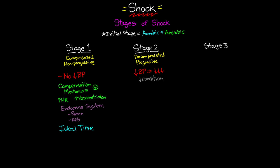In this second stage you're going to see hypoxic injury as a direct result of the decreased perfusion and decreased oxygen supply. As shock continues, more and more damage is done to cells and organs as a result of that persistent hypotension, and you'll begin to see the effects on all the major body systems.